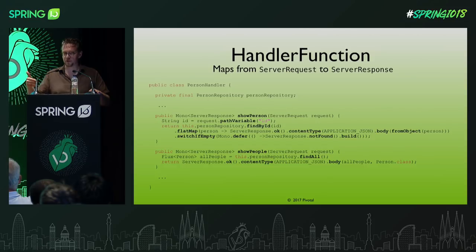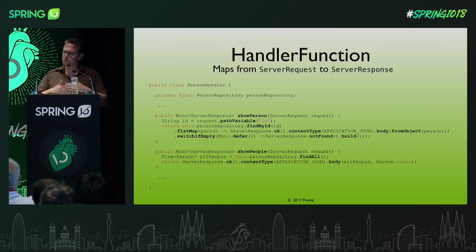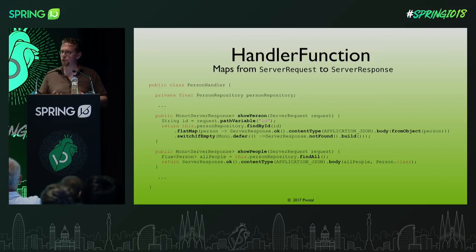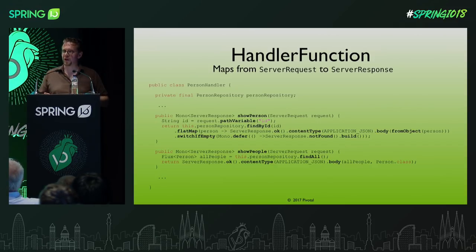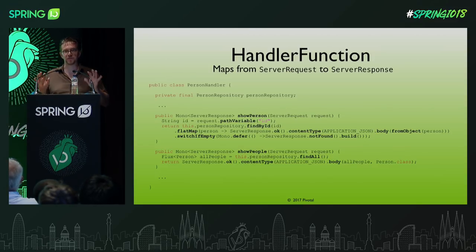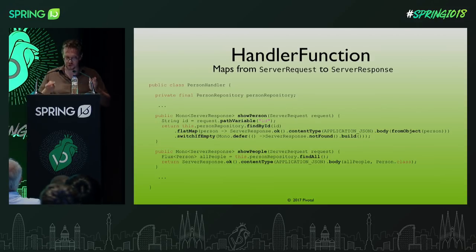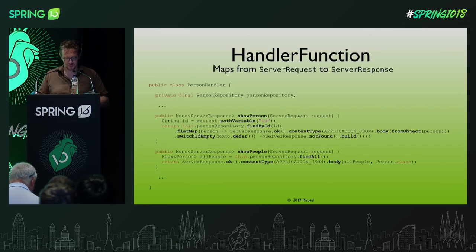So: if it's there, show it; if it's not there, return not found. One thing to note is this is a much lower level than Spring MVC. Spring MVC does a lot of things for you — you can just take the path variable as a parameter. But in a functional application, all functions have to look the same signature-wise, so that's why we deal with the server request and use it to get our path variable.